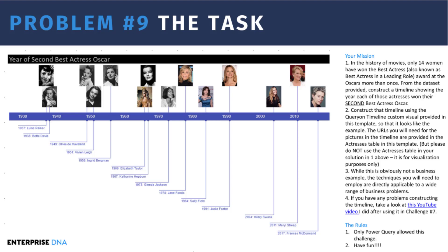The context of this problem is that in the history of movies, 14 women have won the Best Actress — also known as Best Actress in a Leading Role — award at the Oscars more than once. I've got a dataset from Kaggle that covers the entire duration of the Academy Awards from the early 1930s to the present. You've got to go through that dataset, find the instances where somebody won a Best Actress award more than once, and then on the timeline graph out the year they won their second award. There are some interesting wrinkles in this both from an analytical standpoint and in the visualization.